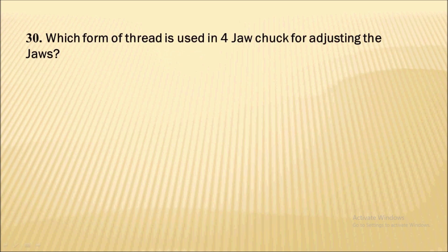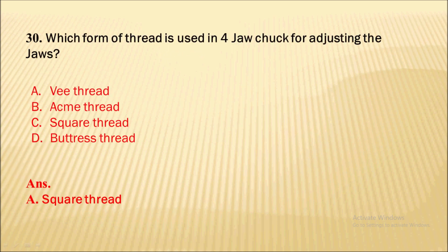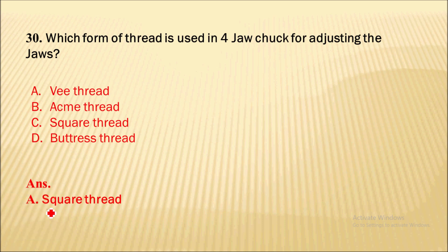The last question: which form of thread is used in a four jaw chuck for adjusting the jaws? The form of thread used in a four jaw chuck is a square thread.